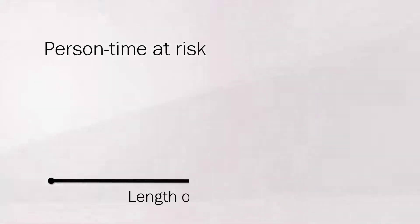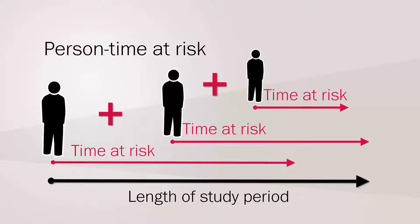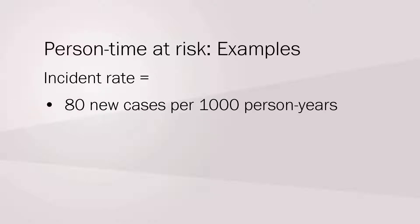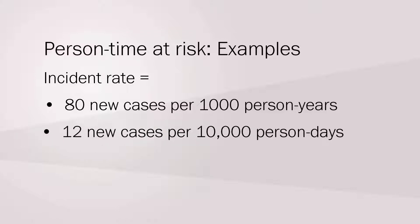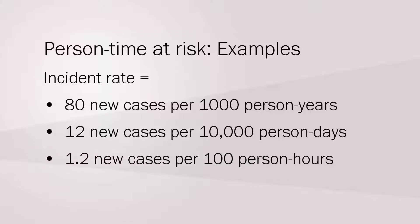Person time is the sum of each person's individual time at risk — from when they join the study to when they contract the disease or develop the health outcome. Person time can be measured in years, months, or days. For example, incidence rate equals 80 new cases per 1,000 person-years; 12 new cases per 10,000 person-days; or 1.2 new cases per 100 person-hours.